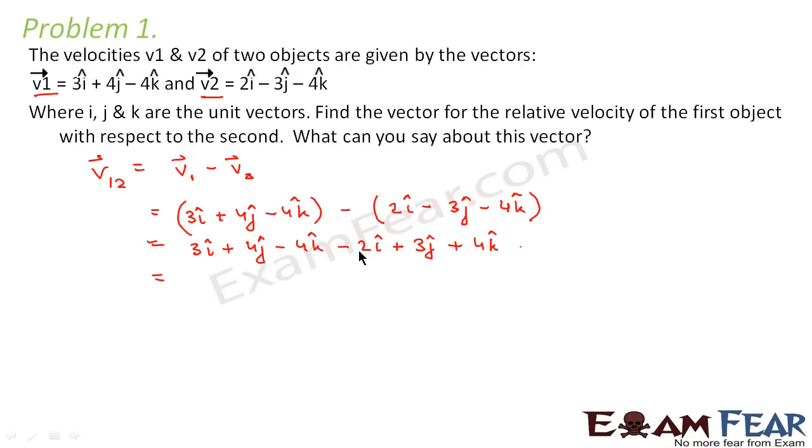Now you take all the i components together. That is 3 minus 2 i cap, plus the j components 4 plus 3, that's 7j cap, plus minus 4k cap plus 4k cap. So these two k components get cancelled. So we are left with i cap plus 7j cap. So this is the relative velocity.